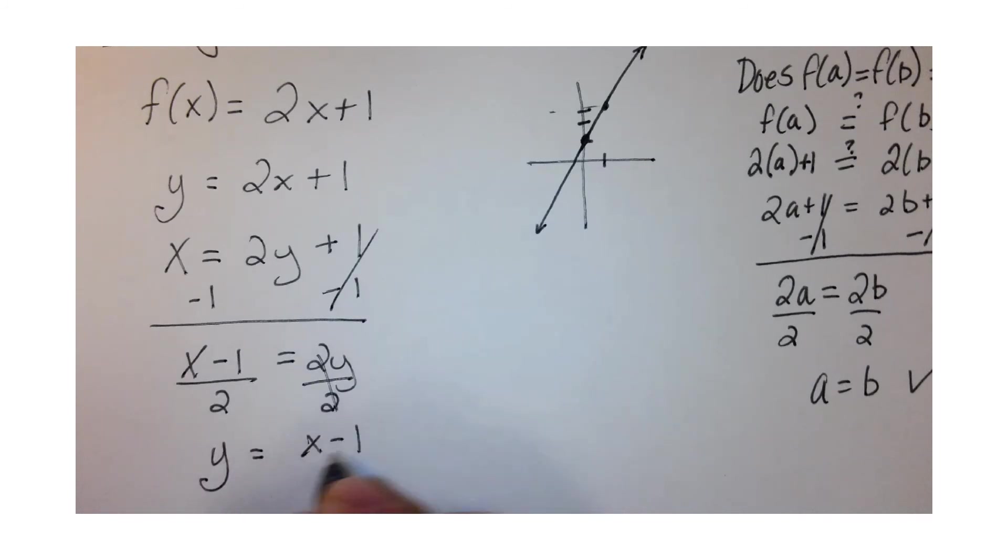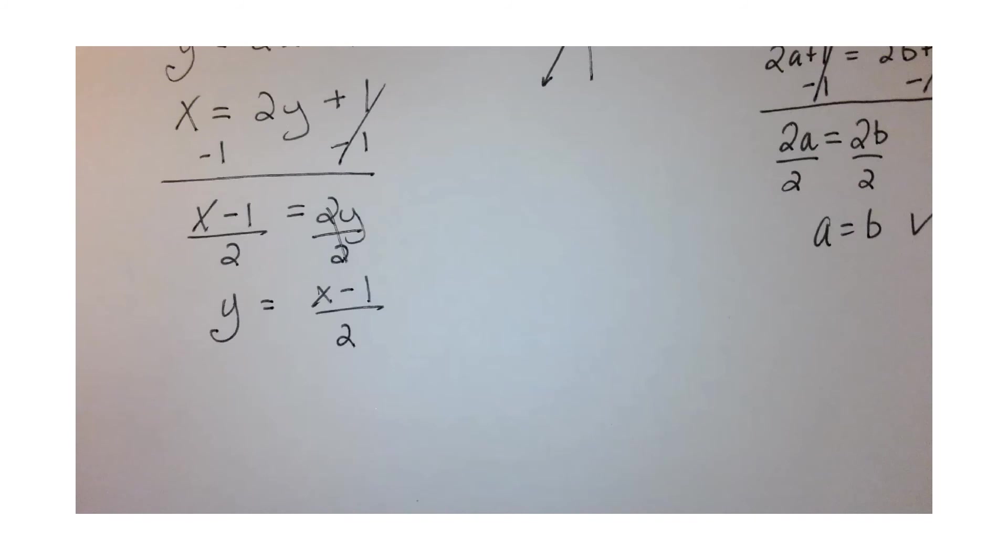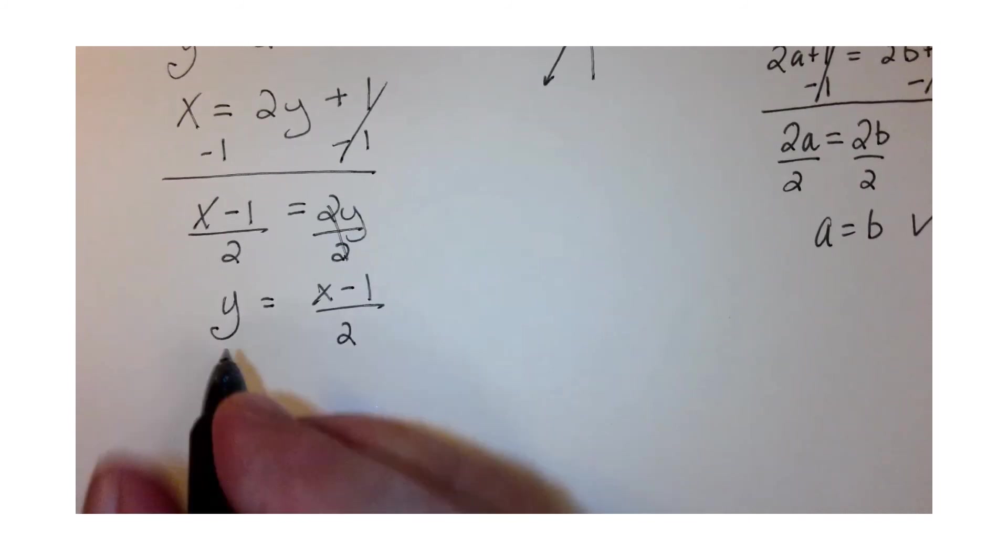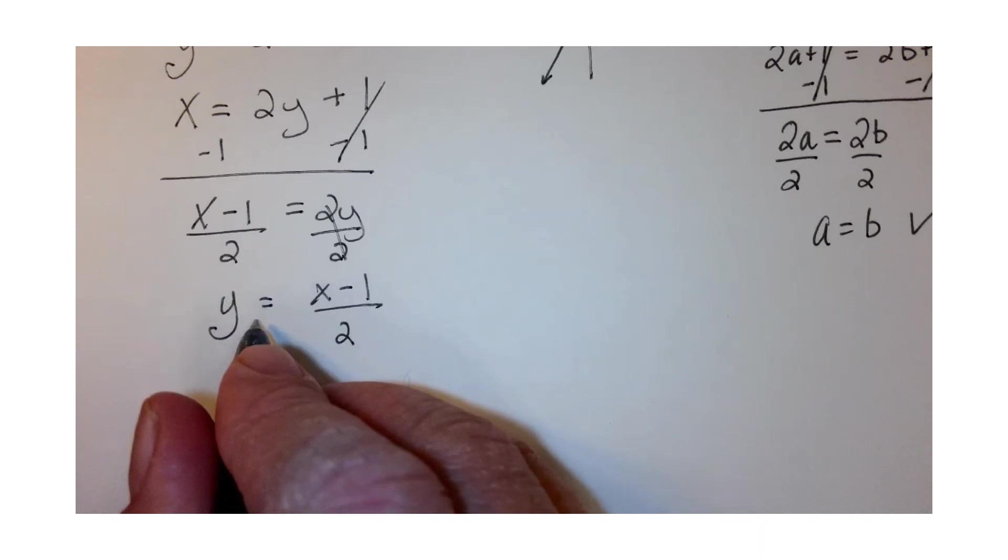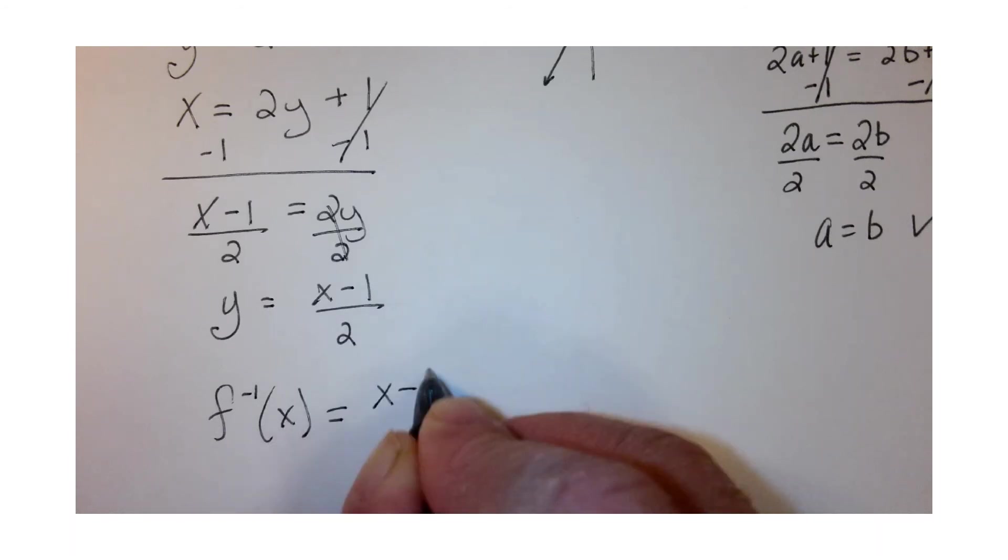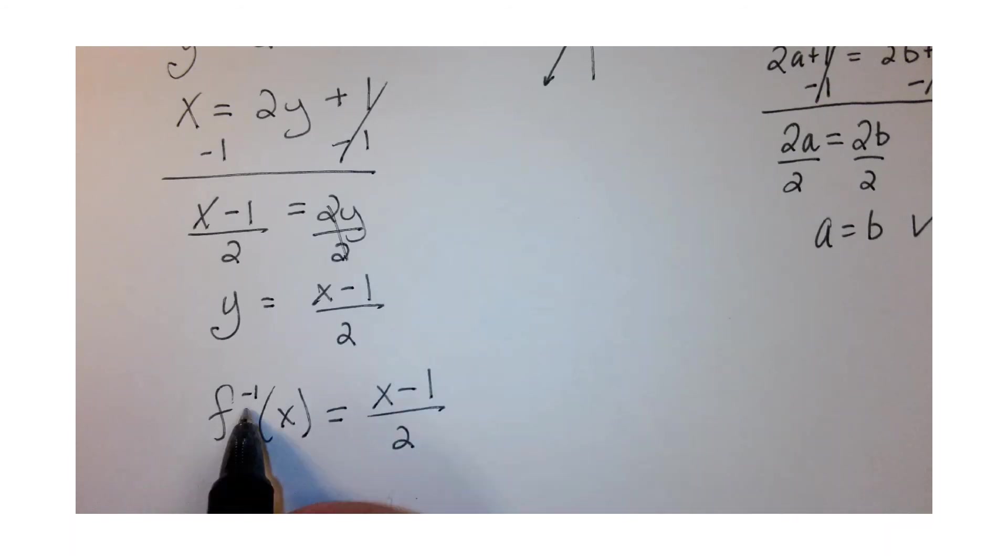We're almost there. Now we can say that y is the inverse function, so we're going to say f^(-1)(x) = (x - 1)/2. This is not a negative 1 exponent...